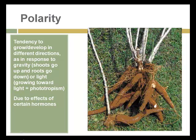Polarity is the tendency of a plant to grow or develop in different directions in response to gravity — an important concept. Shoots go up and roots go down. But that is a response to gravity and an adaptation that plants have made, and it's due to the effect of certain hormones in the plant, which we'll talk about in a few slides.